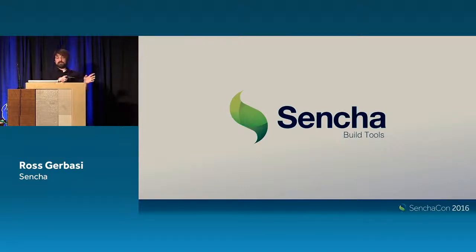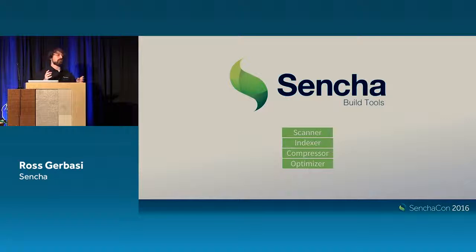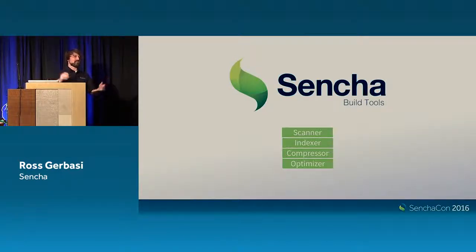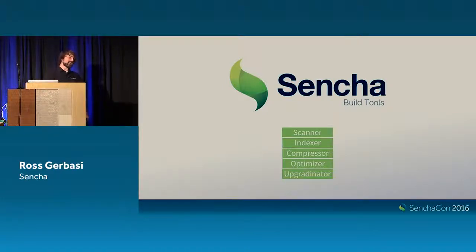Build tools — I'm going to go through this real quick because I want time for questions. We play in this game also. There are four things we know we'll likely develop as thin layers over Webpack or other tools: a scanner, an indexer, an optimizer, and a compressor. How many people can't wait to dive into the next version of EXT? How many people want to upgrade their app right now? How many people would raise their hand if we said we'll help you upgrade?